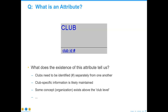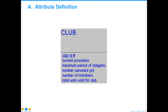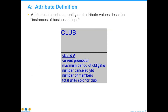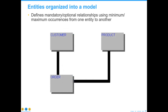Here's some other things we can put out there: maximum period of obligation, number of cancellations year to date, number of members, total units sold — these are all things that can tell us about the business thing we're trying to do. The entities are organized into models, and they now tell us that clubs and products are related by orders to each other. An order is what gets a customer to buy a product in this particular scenario.